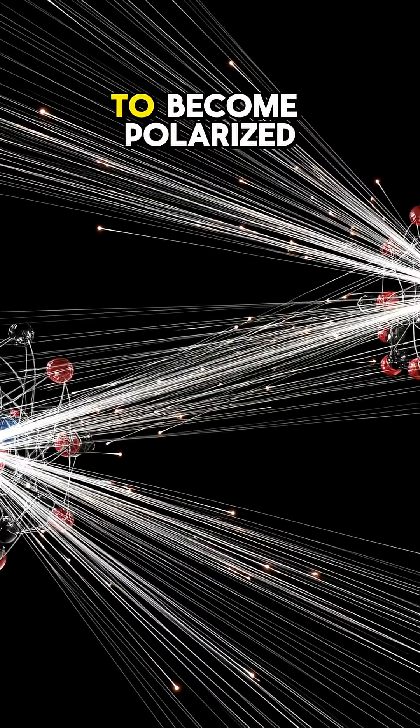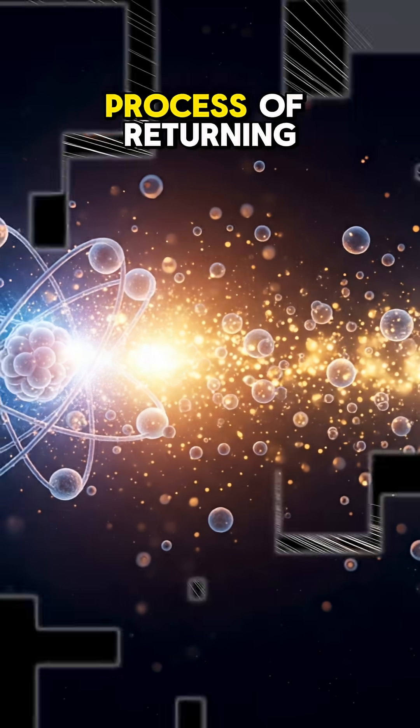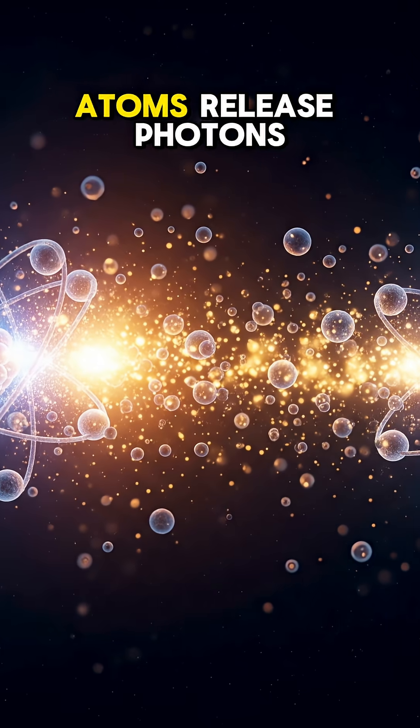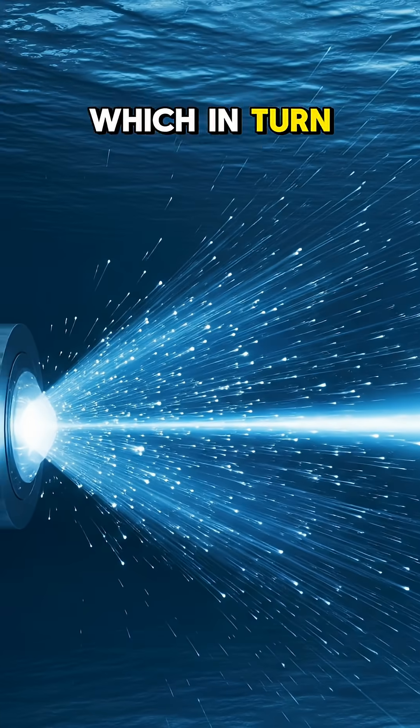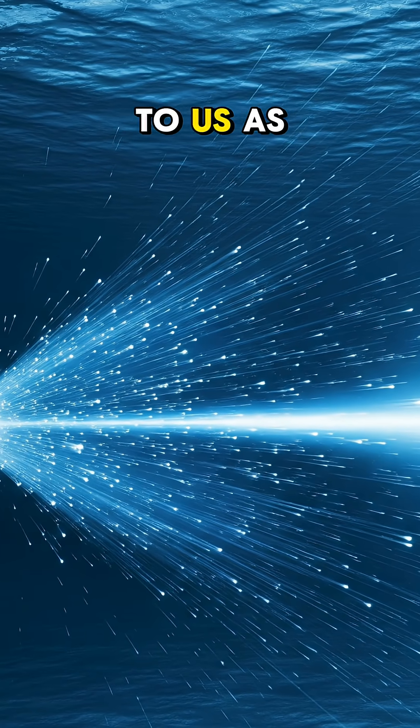This causes them to become polarized by displacing their electrons, and in a process of returning to a normal state, atoms release photons, which in turn produce blue light that is known to us as Cherenkov radiation.